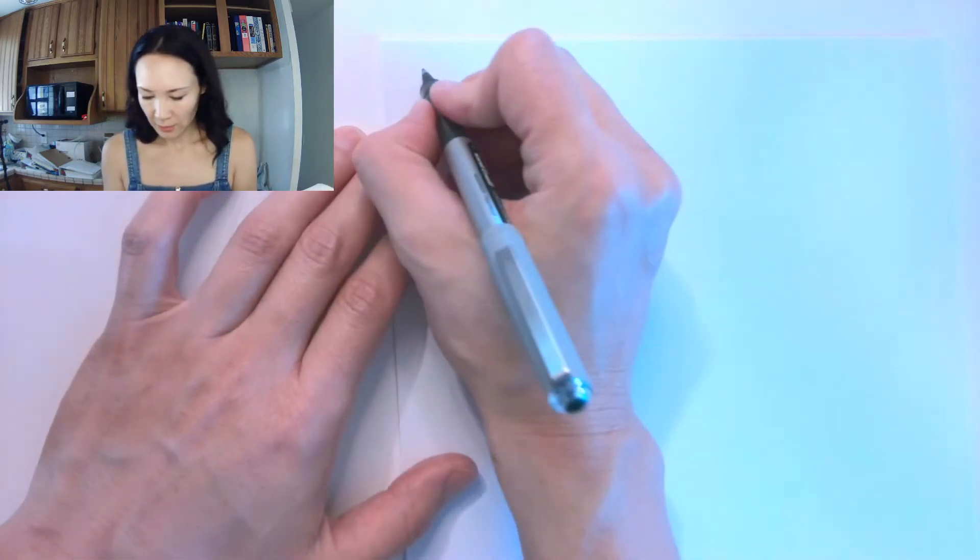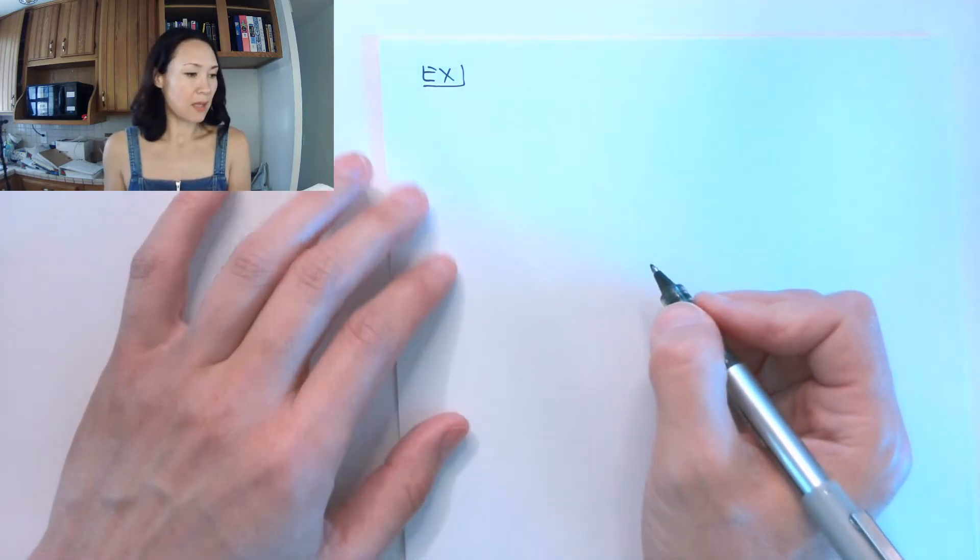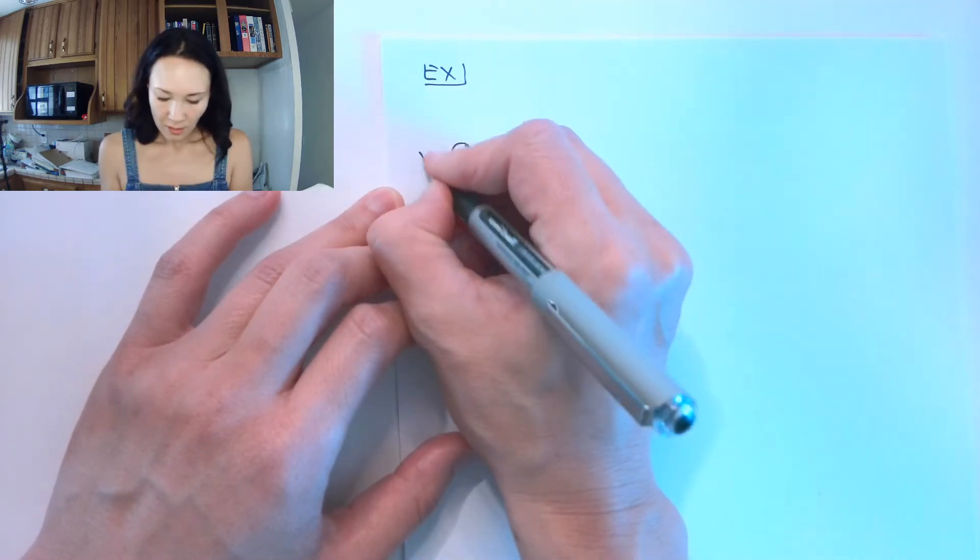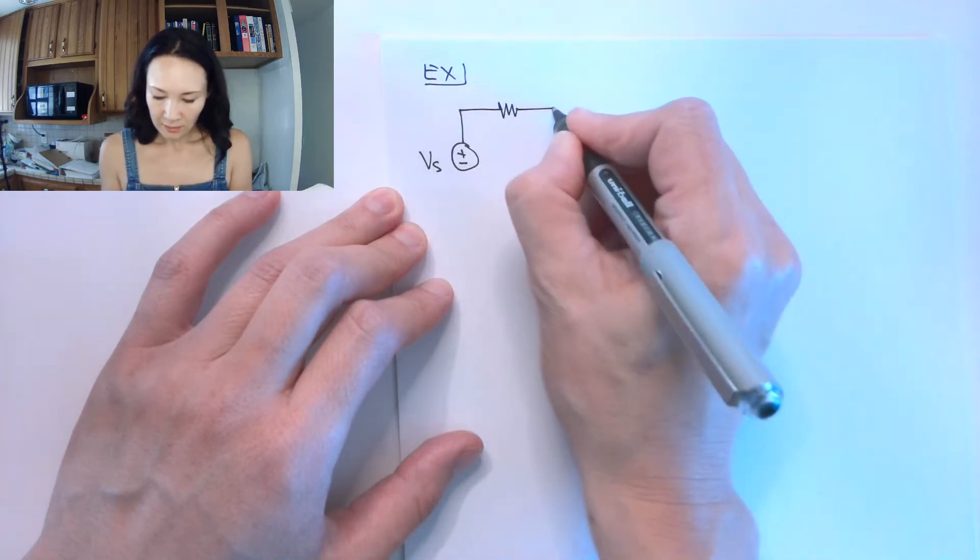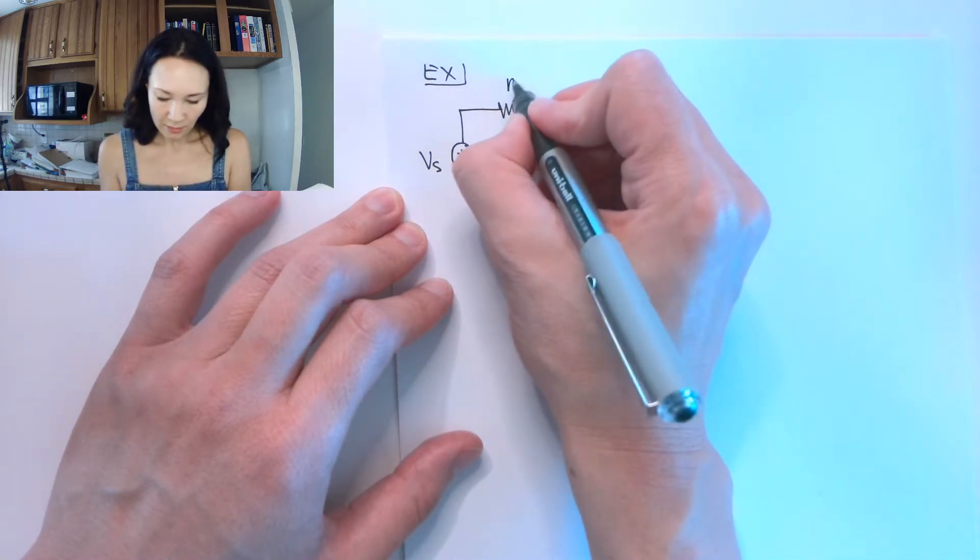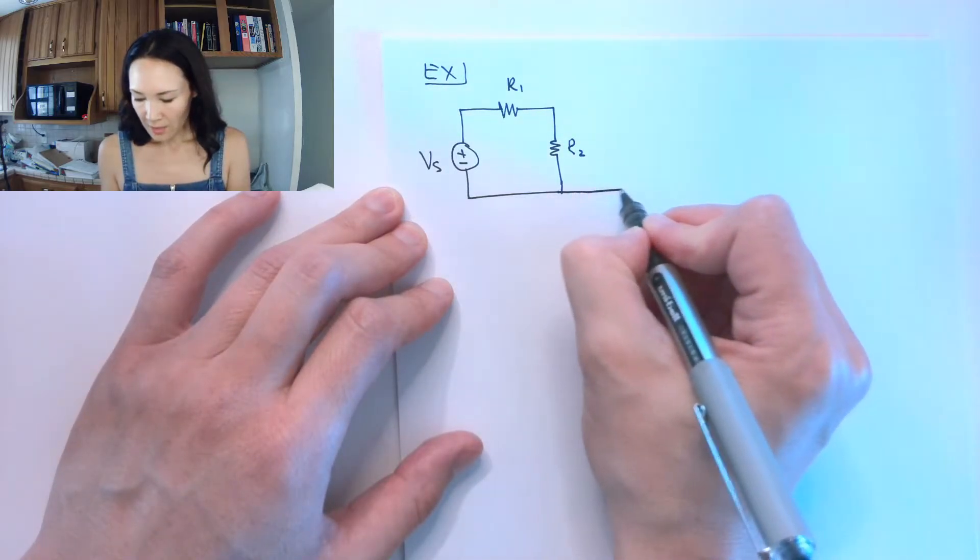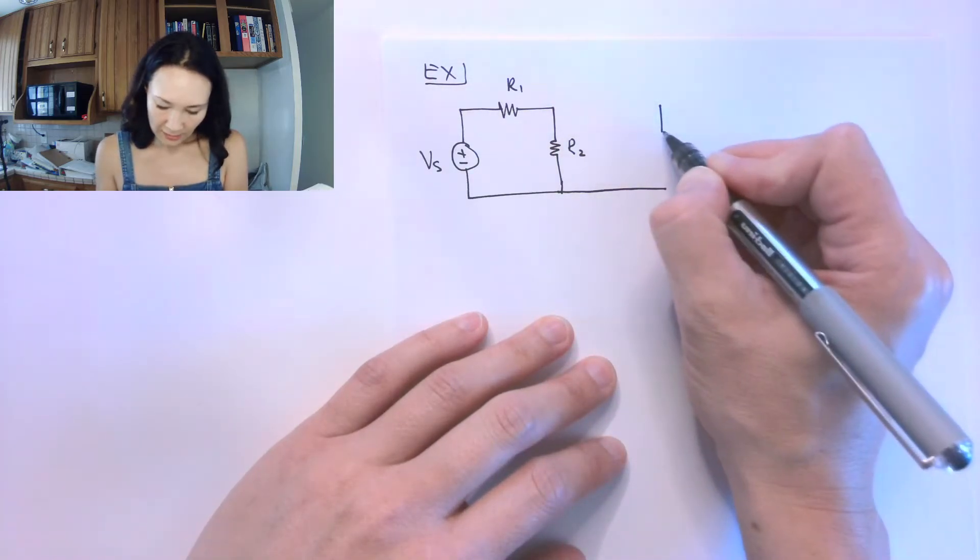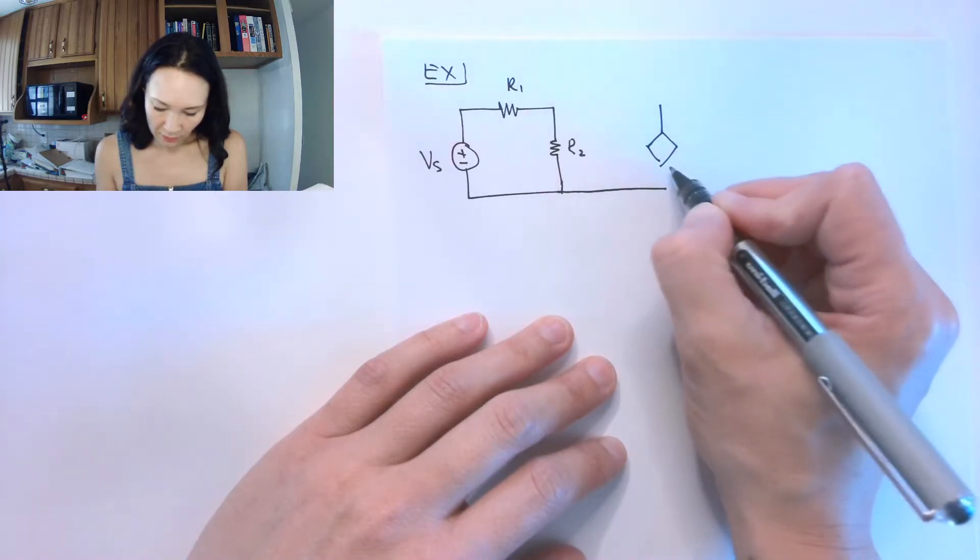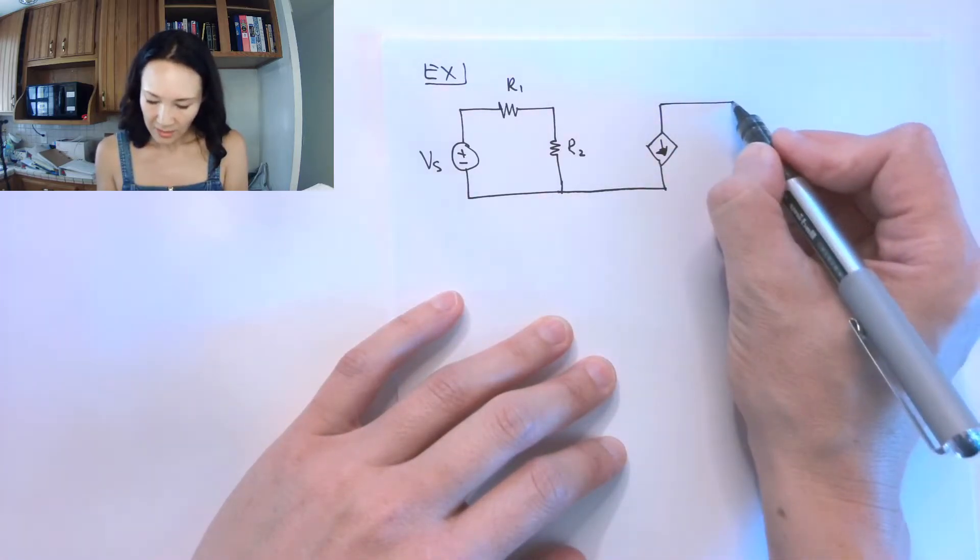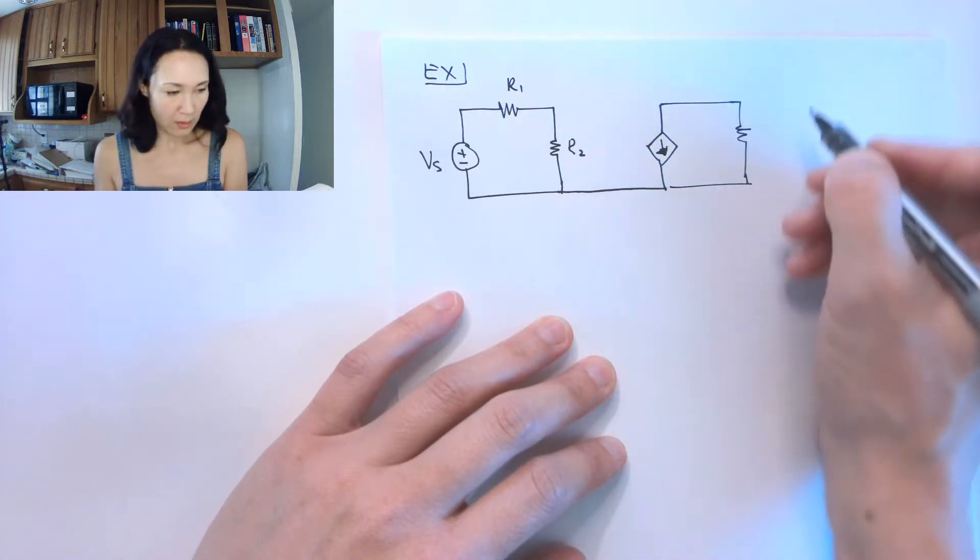Suppose we have a circuit with an independent source Vs in series with two resistors here. Let's call this R1 and this is R2. And we haven't seen this kind of circuit before, but let's say this bottom wire is connected to a secondary part of the circuit. In this secondary part, we're going to have a dependent current source, and that will be in parallel with two resistors.